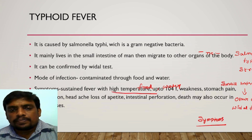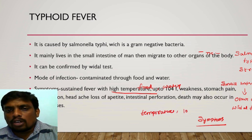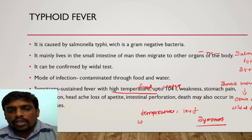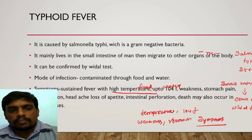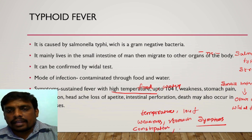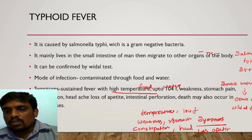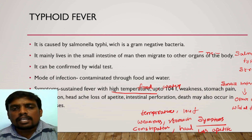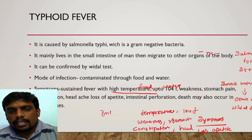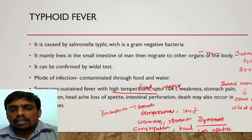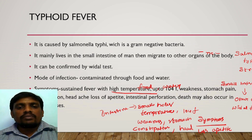Sustained high temperature, up to 104 degrees Fahrenheit, is one of the symptoms. Weakness, stomachache, and constipation — that is, difficulty in excretion — are also symptoms. Headache and loss of appetite are additional symptoms. Intestinal perforations can also occur, where the wall of the intestine gets small holes due to heavy infection.